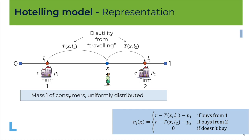What is important is that they are uniformly distributed. These two firms offer the same product, but in the eyes of the consumer — say one consumer here, Ms. X — the two products are not the same because she has to travel from her position X to where the shop of firm 2 or the shop of firm 1 are actually located. Traveling is costly. There is a cost which we note T(X, L1) — that's the cost of going from X to L1 — and similarly T(X, L2) is the cost of going from X to L2. This fits quite well with a geographical interpretation with physical cost of traveling.